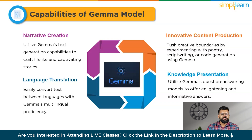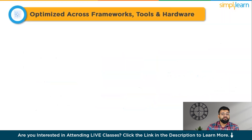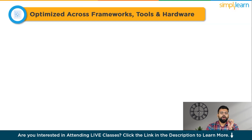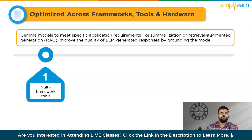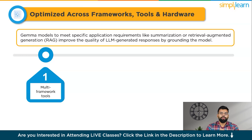Now let's understand the frameworks, tools, and hardware platforms supported by Gemma. You can customize Gemma models to meet specific application requirements like summarization or retrieval augmented generation, i.e., RAG. RAG is an AI framework for improving the quality of LLM-generated responses by grounding the model. Wide-ranging tools, hardware, and frameworks supported by Gemma include multi-framework tools: leverage your preferred framework with reference implementations available for inference and fine-tuning across Keras 3.0, native PyTorch, JX, and Hugging Face Transformers.